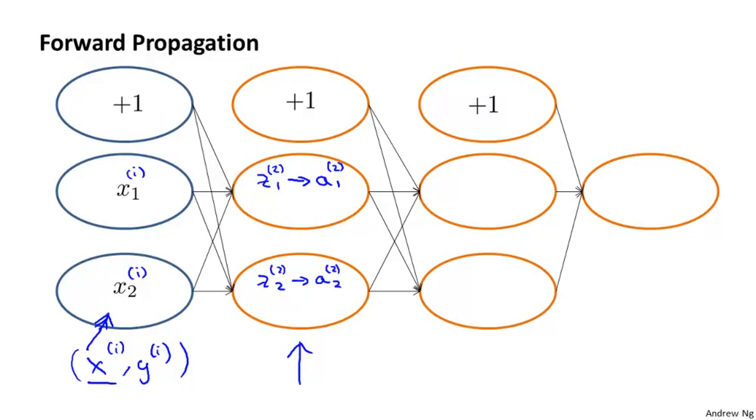So that gives us a21 and a22. And then we forward propagate again to get here z31, apply the sigmoid, or the logistic function, the activation function to that, to get a31. And similarly, like so. Until we get z41, apply the activation function, this gives us a41, which is the final output value of the neural network.